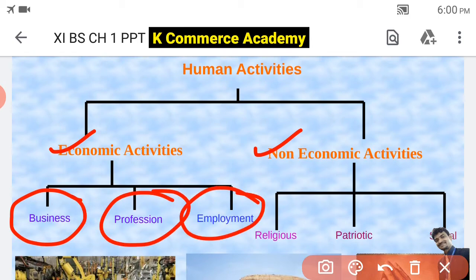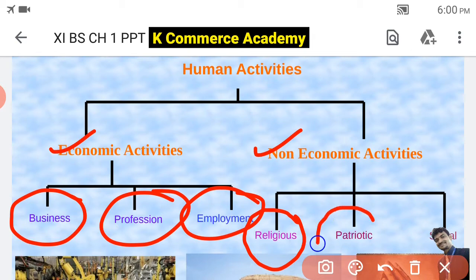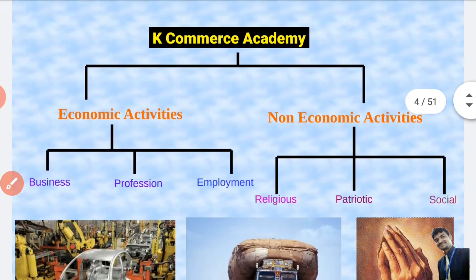Non-economic activities can be classified as religious activities — related to religion, faith, worship or god — patriotic activities related to the nation and country, and social activities. So economic activities have business, profession and employment, while non-economic activities include religious activities, patriotic activities and social activities.